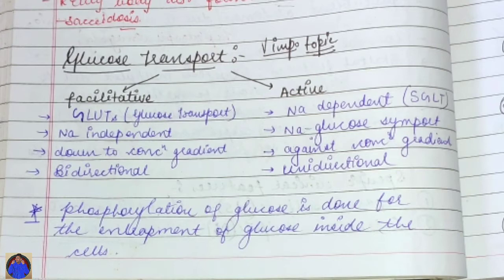In facultative transport, glucose is transported by the help of GLUTs, also called glucose transporters. In active transport, it is by the help of SGLTs. The facultative transporters are sodium-independent, move down the concentration gradient, and are bi-directional. Active transporters are sodium-dependent sodium-glucose importers, work against the concentration gradient, and are uni-directional.